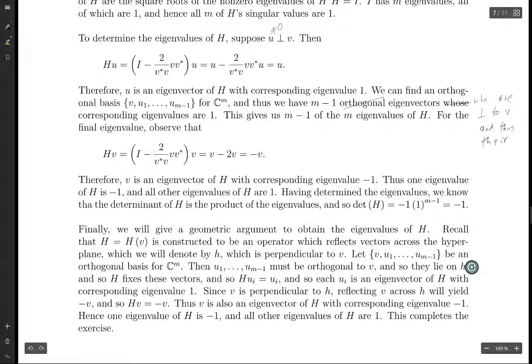and so in particular these M minus 1 vectors lie on H, the hyperplane. All these vectors lie on the hyperplane, and this matrix reflects across the hyperplane but doesn't do anything to the hyperplane itself. And so since these vectors U1 through UM minus 1 lie on the hyperplane, they're fixed by the hyperplane. So what that means is that HUI equals UI for each I, and so each UI is an eigenvector of H with corresponding eigenvalue 1.